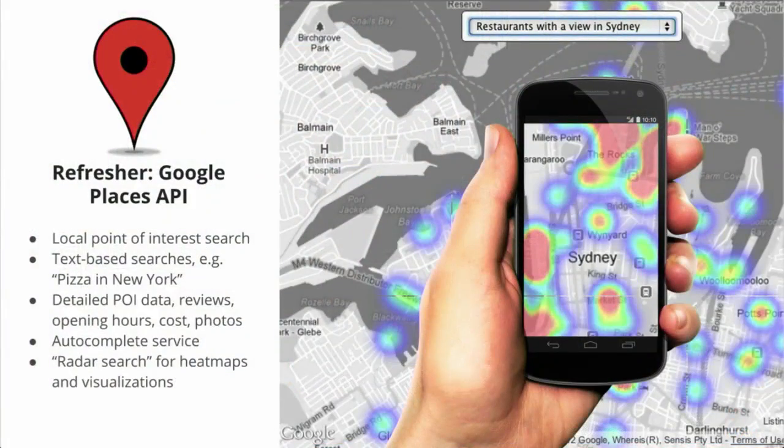Sure, thanks. Today I'm going to talk to you about the Places API, which is a very powerful API that allows you to integrate Google's database of over 100 million points of interest into your web or mobile application. If you're not familiar with the Places API, it provides a search capability to look for local points of interest, like restaurants or any sorts of landmarks, and bring them into your application. You can do a variety of searches based off keywords or text queries.